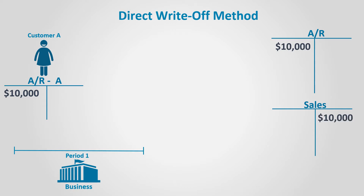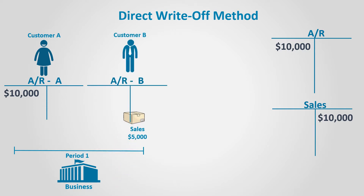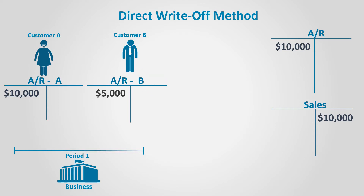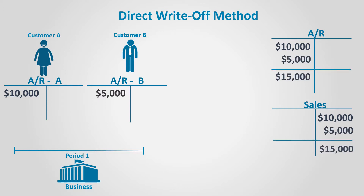Now assume that the company makes a sale to Customer B for $5,000. Again, the accounts receivable of Customer B in the subsidiary ledger will be debited together with the general accounts receivable account, and the sales revenue account will be credited for the same amount.